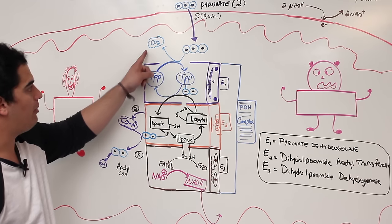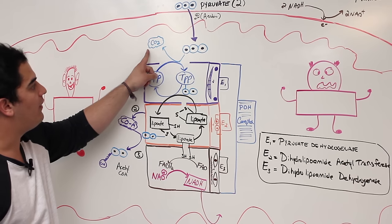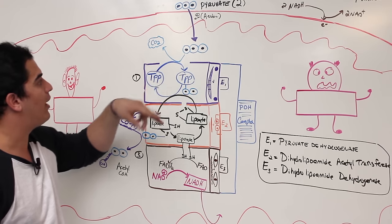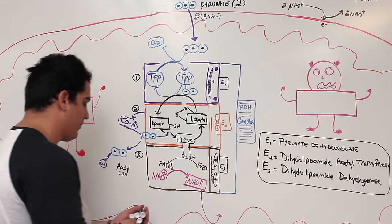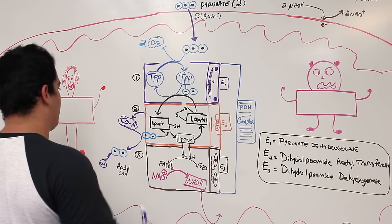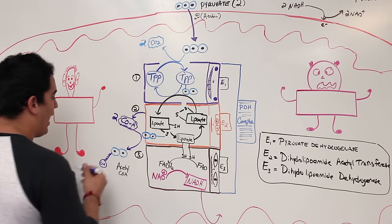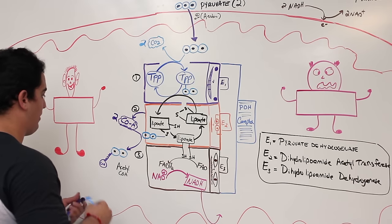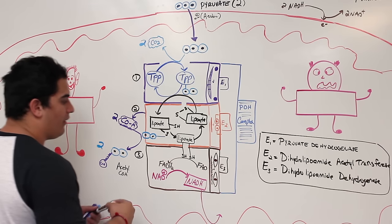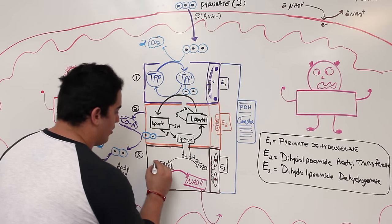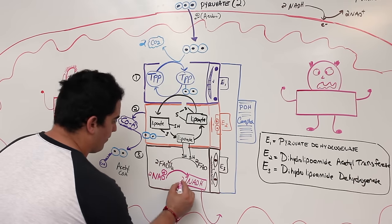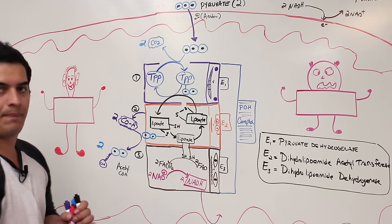Since there are two pyruvates from glycolysis: two CO2 are generated, two CoA's are used, two acetyl-CoA's are made, two FAD's are converted into FADH2, and two NAD⁺ are converted into NADH.